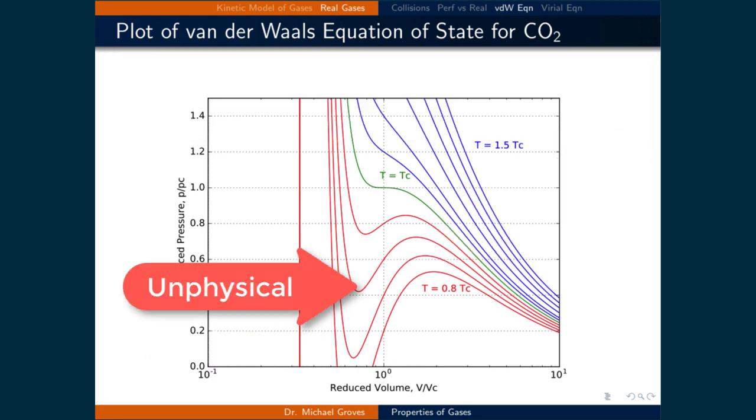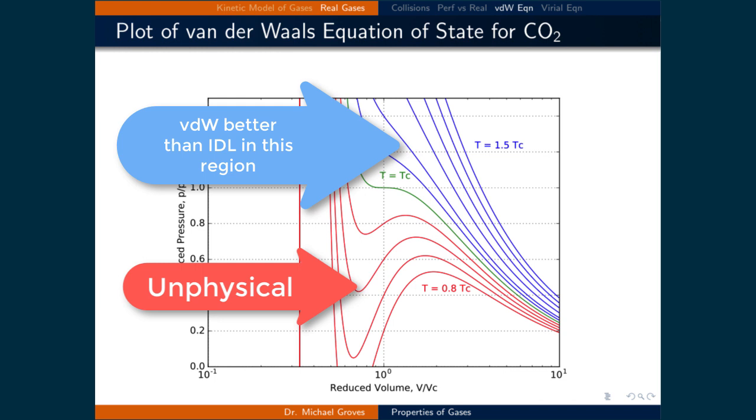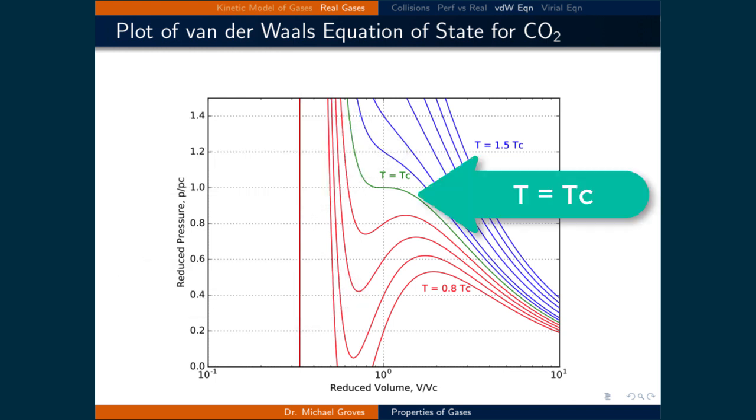Regardless of the obvious unphysical prediction by the van der Waals equation of state, it more accurately predicts physical systems than the ideal gas law. The green isotherm is when the temperature is set to the critical temperature. At the critical pressure, denoted at 1, since the pressure and volume are scaled to the critical values, the isotherm goes flat, denoting that the gas went through the critical point.